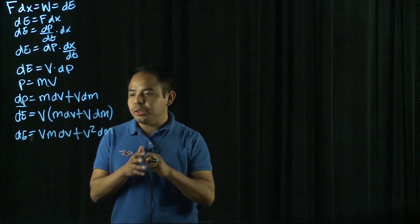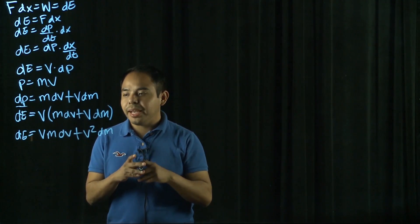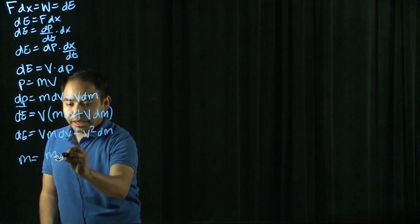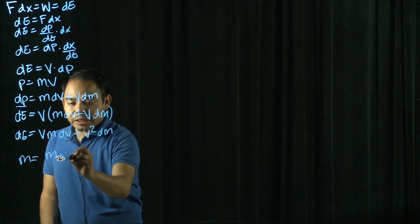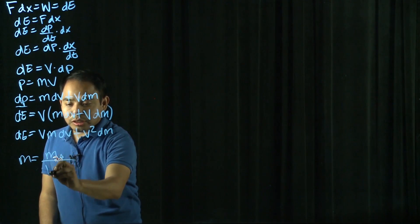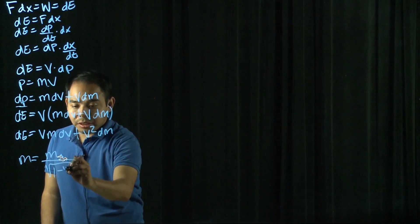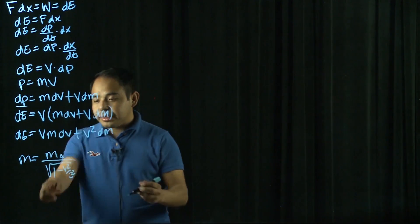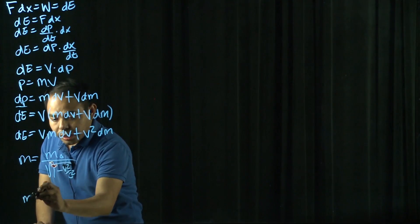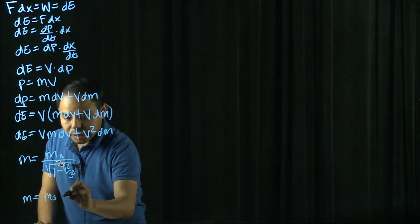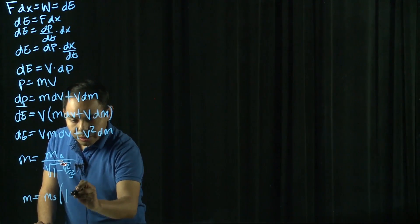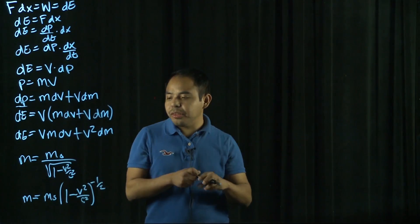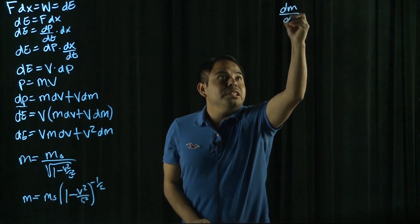At this point, we're going to introduce relativistic mass. That is the mass equal to the rest mass times the Lorentz factor, which is 1 over the square root of 1 minus v squared over c squared. We can rewrite this as m equals the rest mass times (1 minus v squared over c squared) to the negative one-half. And then, if we take the derivative with respect to velocity, we end up with...